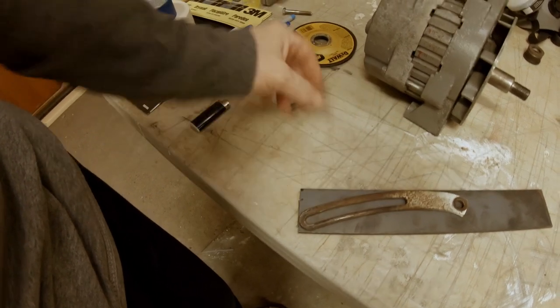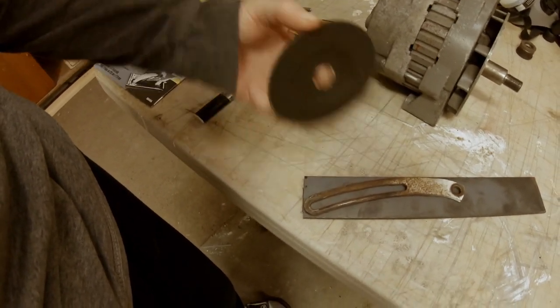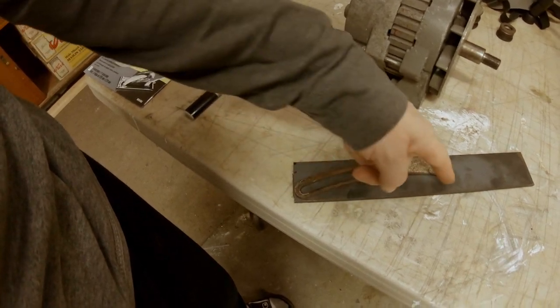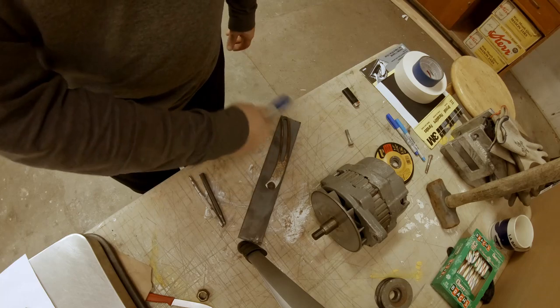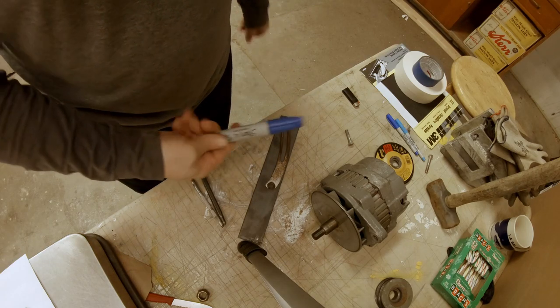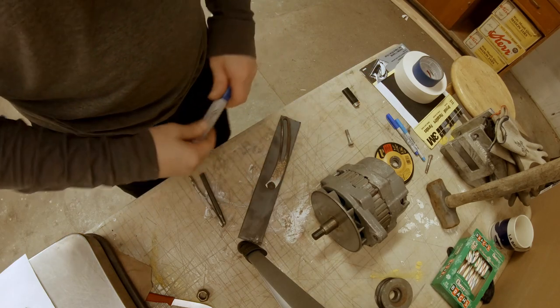Then we'll cut it with an abrasive disc. After that, we'll get the ends cut to get the same shape. You can use dykem on this and then scribe it. A cheap alternative is a Sharpie.